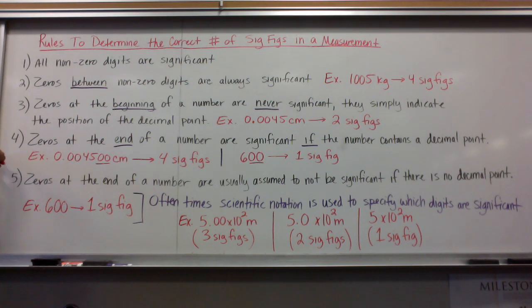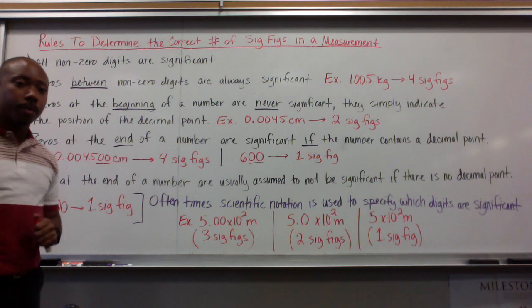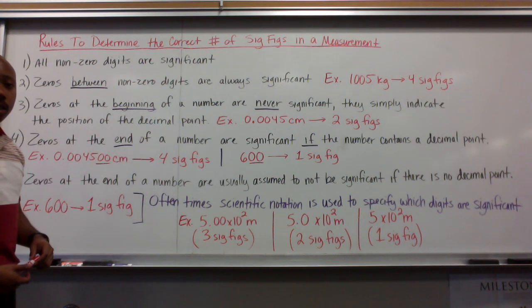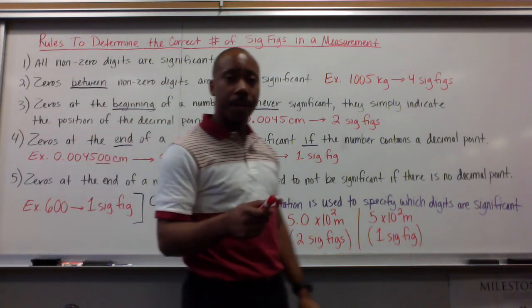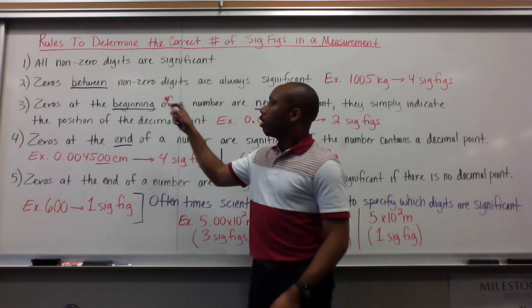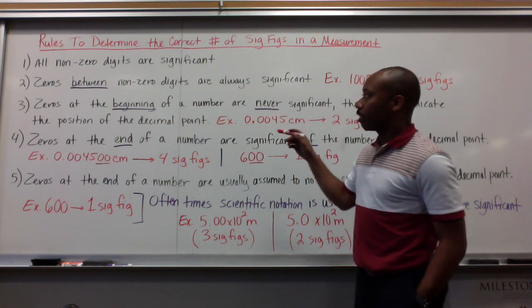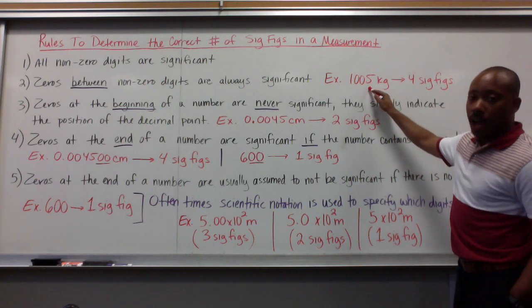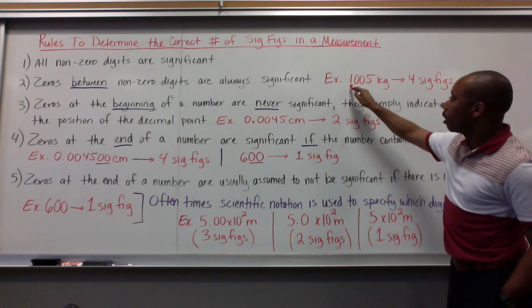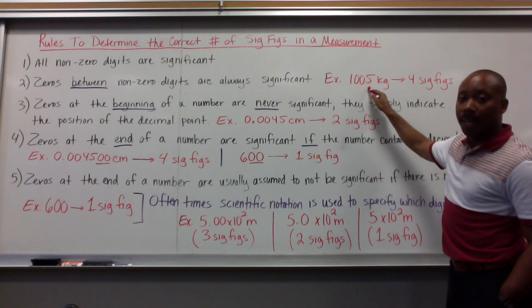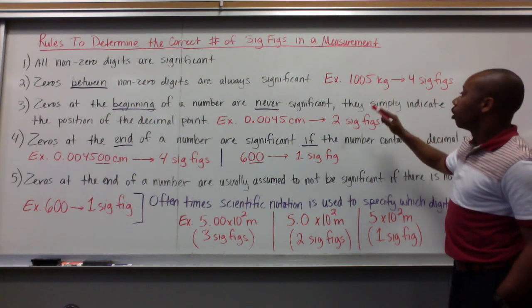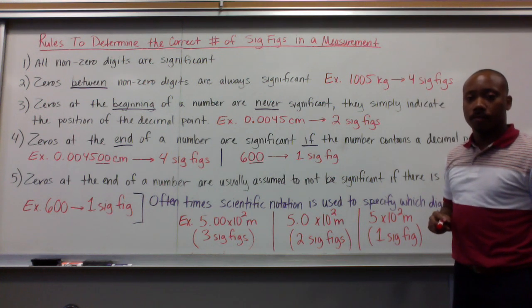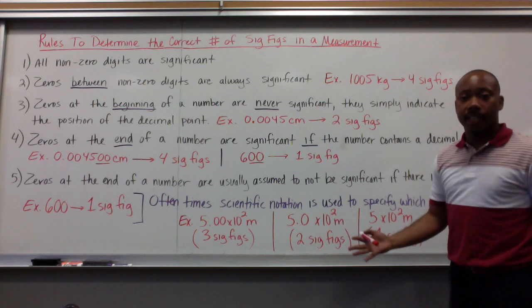Rules to determine the correct number of significant figures in a measurement. Rule number one: all non-zero digits are significant — anything that's not a zero is a significant figure. Rule two: zeros between non-zero digits are always significant. For example, 1,005 has two zeros between two non-zero digits, making those zeros significant — so I have four significant figures. Notice I have units because we never just have a naked number in science class.